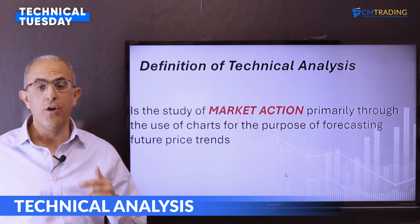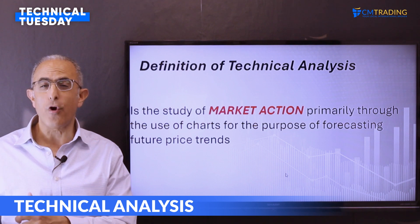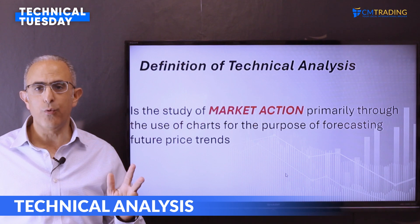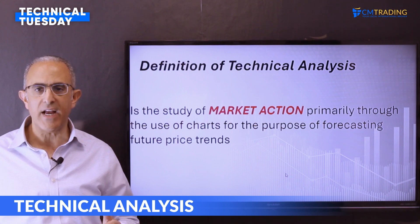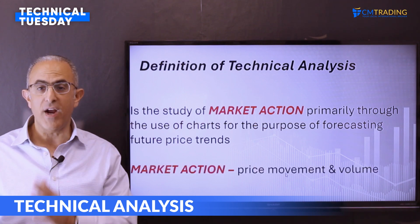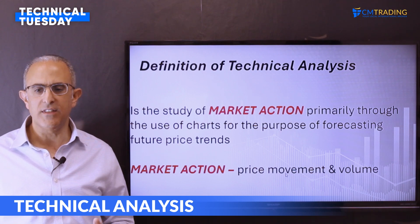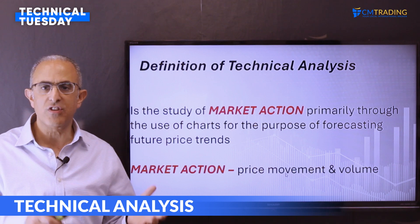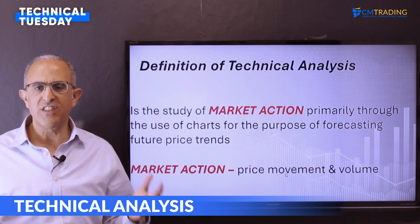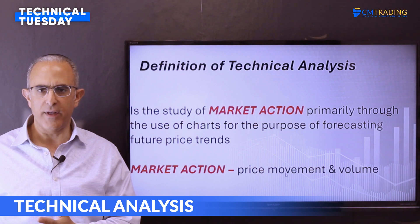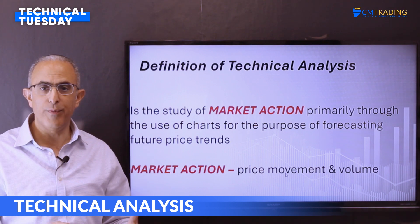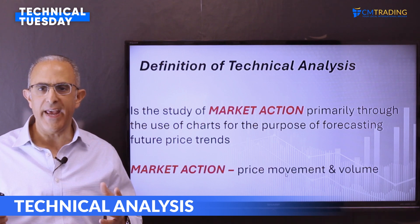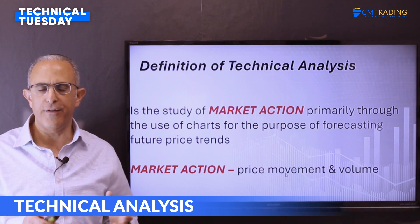Market action is defined by price movement and volume. What that means is there are fluctuations in the market, but those fluctuations are backed up by volume — by participation in the marketplace. So if there's price movement and there's a lot of participation in the market, that creates a character to the financial markets.